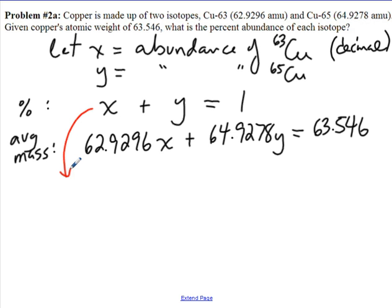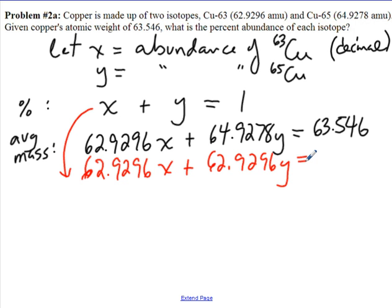I'm going to use elimination. I'm going to take the first equation and choose to eliminate the x's. I notice the second equation has 62.9296 x's. I'm going to multiply my first equation by that coefficient. So now instead of x plus y equals 1, we would have 62.9296x plus 62.9296y equals 62.9296. I multiplied every term in that first equation by 62.9296.